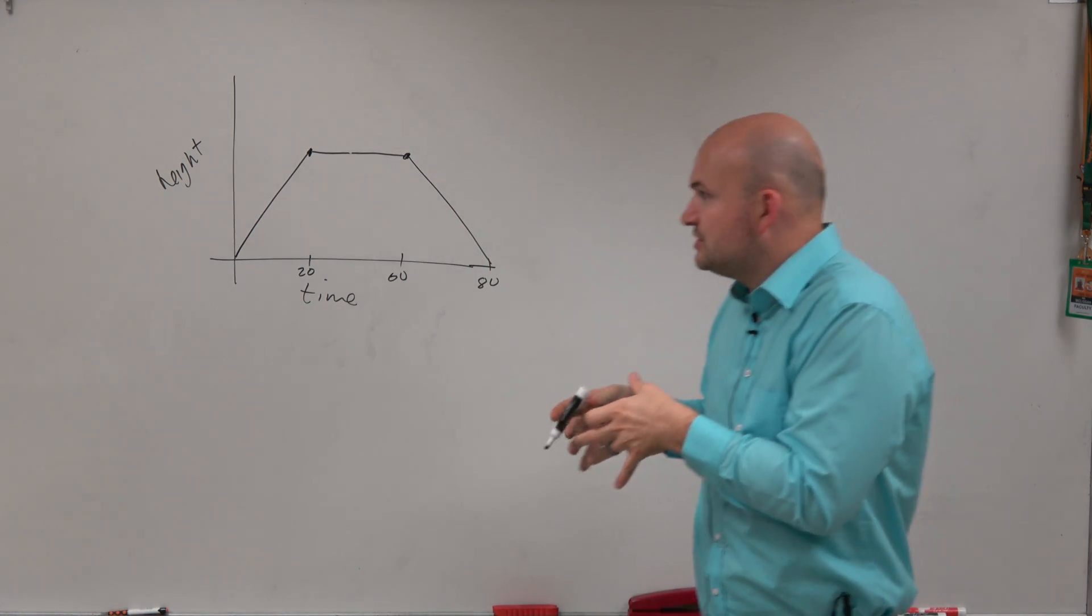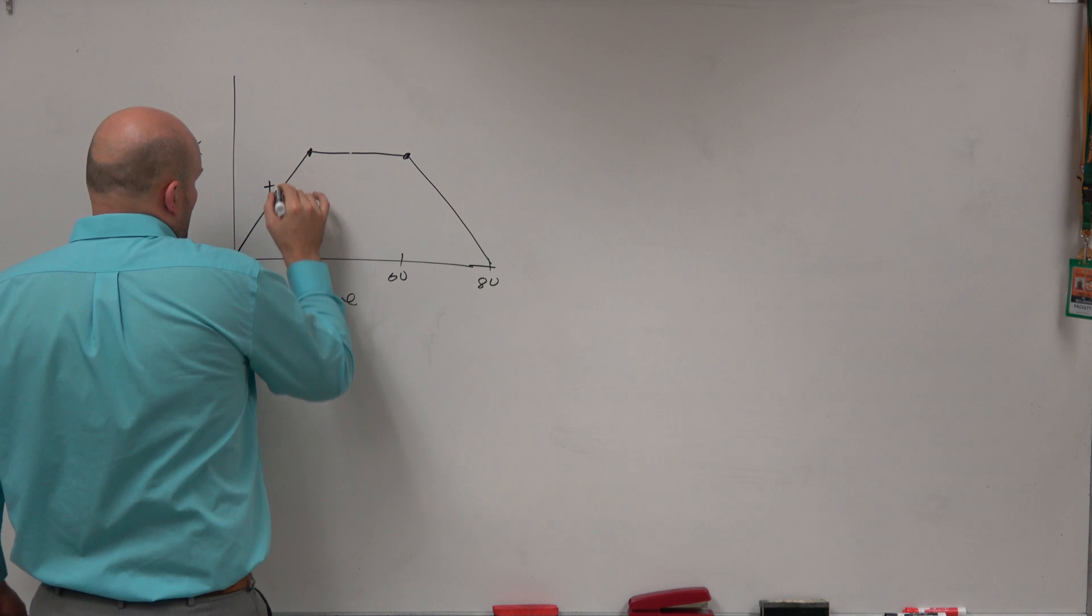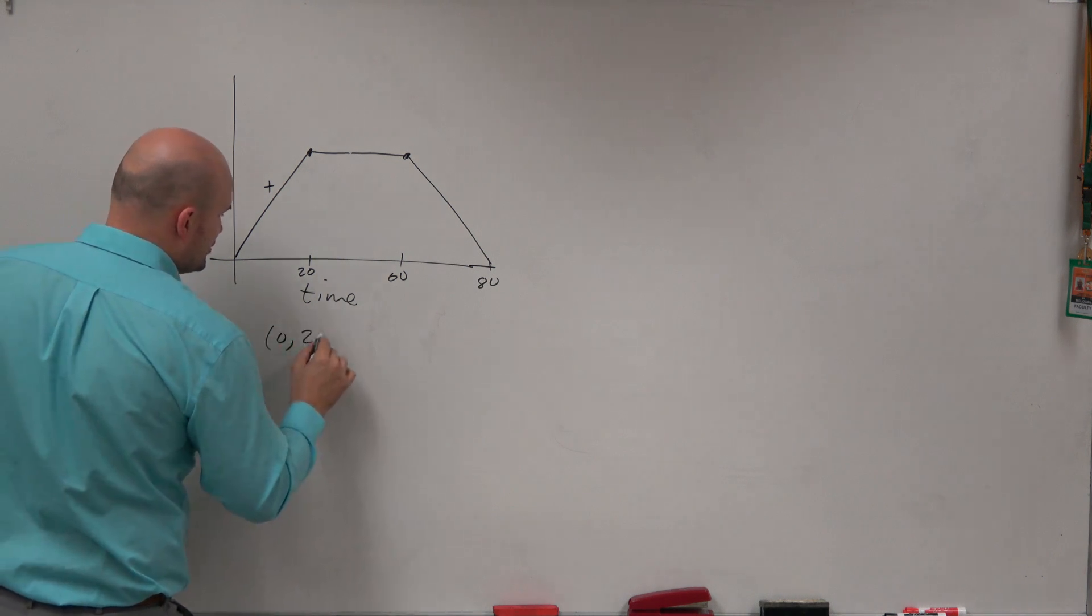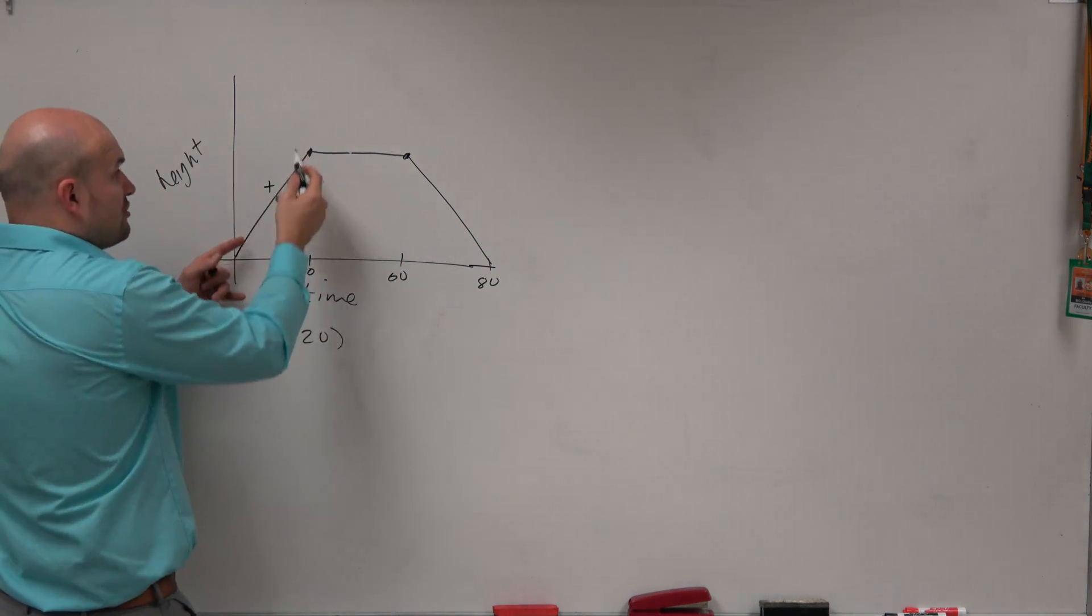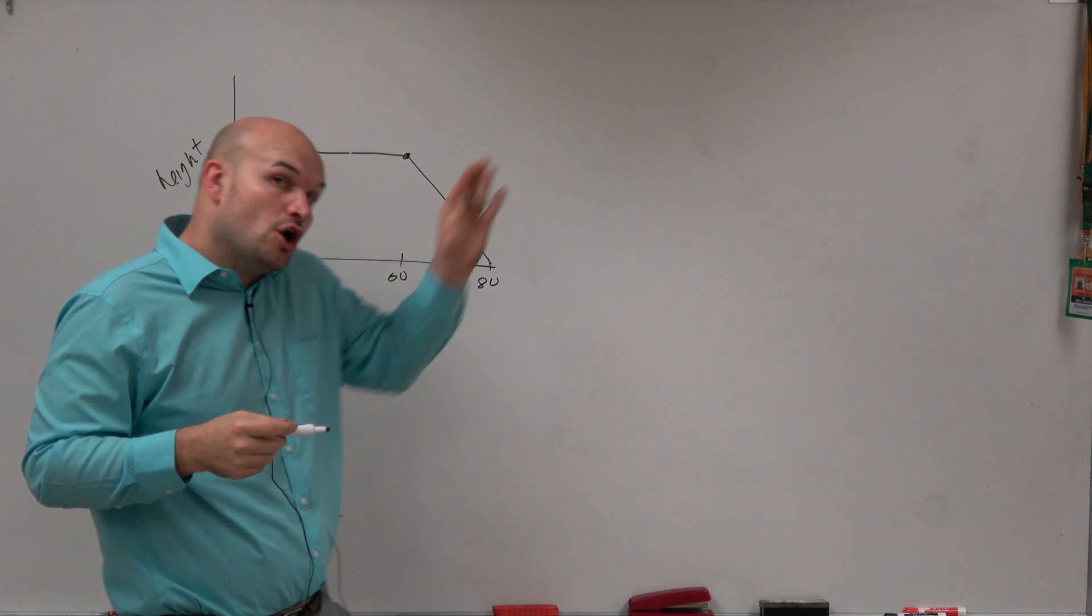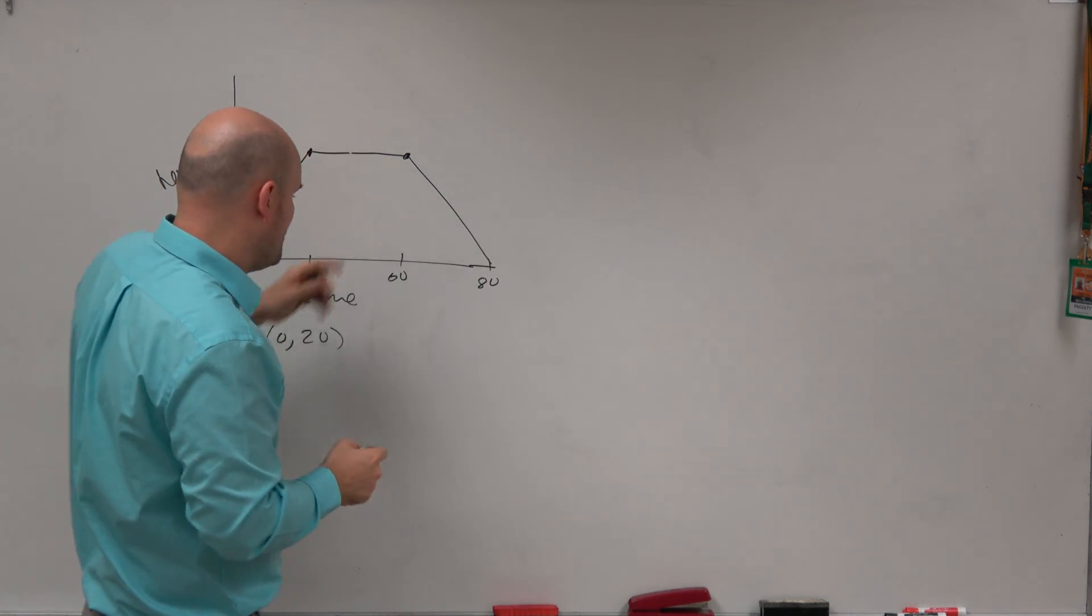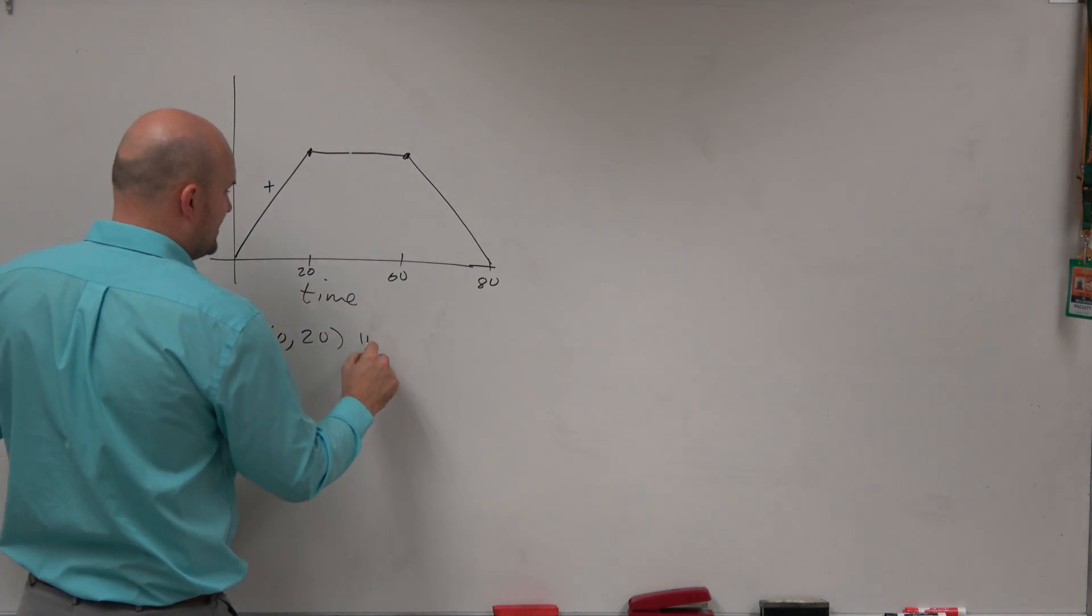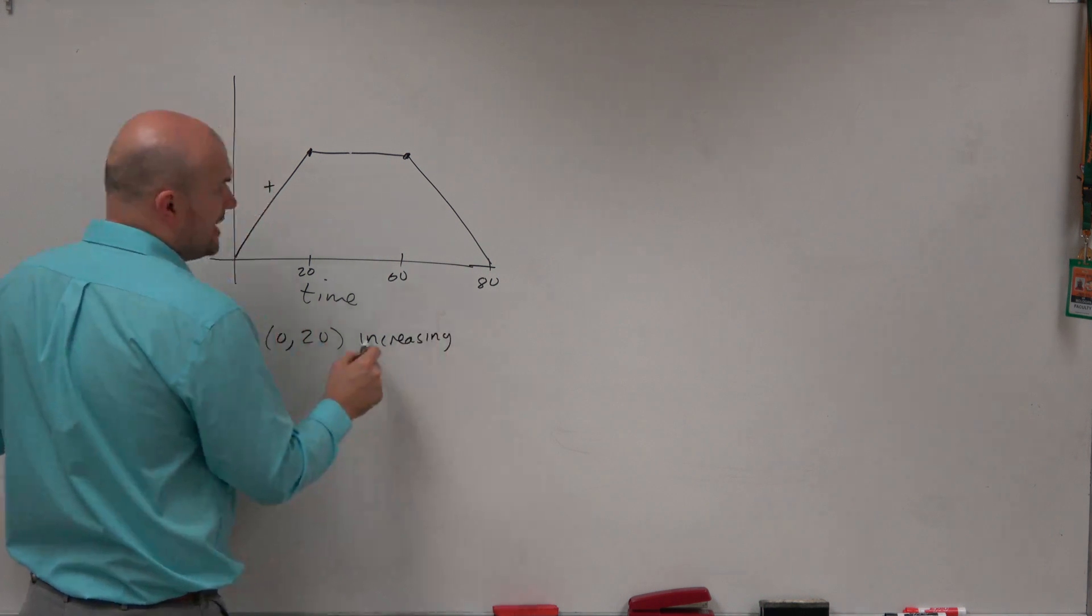The important thing is, what I want you to understand is, obviously, we know from 0 to 20, we are increasing in height. The graph is going up. It has a positive slope. So we would say from 0 to 20, the graph is increasing.